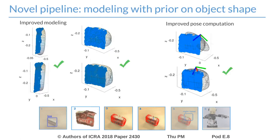The use of prior information on the object's shape during superquadric modeling allows getting more sharp-cornered models. This property leads to better grasping poses. For example, if we use a rounded model for representing a box, a good overlapping between the hand ellipsoid and the object's superquadric is likely also on the box corners. Instead, a more sharp-cornered model leads to a grasping pose located on the top of the box.